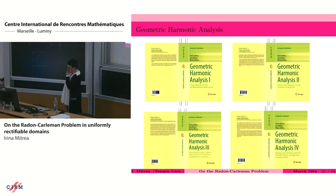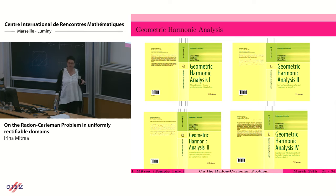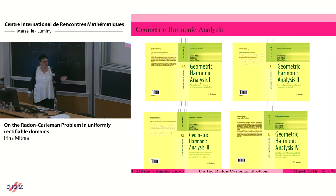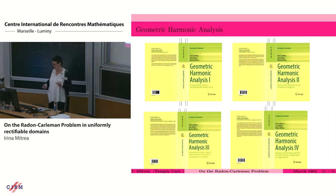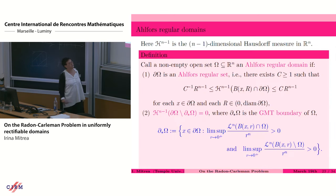I'm going to state the main result, based on a new five-volume series in geometric harmonic analysis developed together with collaborators. In the first four volumes we study the geometry, the singular integral operators, and properties of function spaces in very general geometrical structures. In volume five we address the Radon-Karlemann problem. I'm going to work in the class of infinitesimally flat Ahlfors regular domains — a generalization of C1 domains that is dilation-invariant in the sense described — and uniformly rectifiable domains, working with so-called distinguished coefficient tensors.